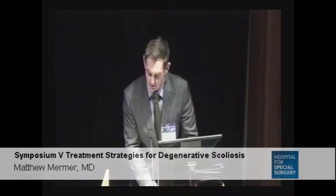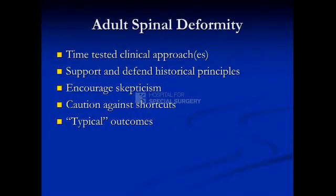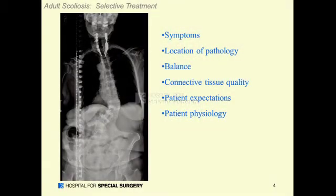Is decompression surgery alone a good option in adults with spine deformity and adult scoliosis? Adult spine deformity, in my opinion and based on what I was taught here, is best applied when you use time-tested clinical approaches supported in the literature. I encourage skepticism and would caution strongly against shortcuts, because adult scoliosis is such a mixed diagnosis — it's not as simple as saying someone has spinal stenosis at a fixed point. This is a complex diagnosis involving many different variables.